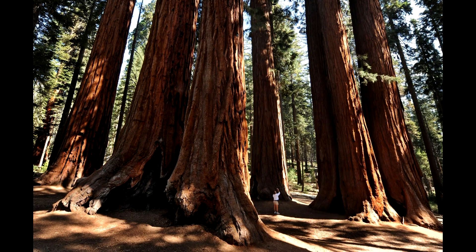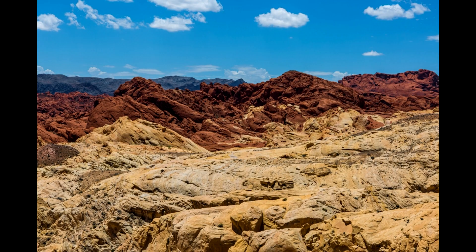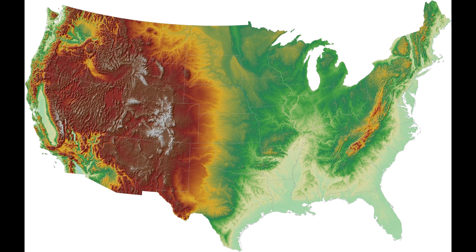Once you get to the eastern side of the Sierra Nevada or the Cascades, things change a lot. The atmosphere dumped all its moisture on the west side, leaving none for the east side. East of the Cascades and Sierra Nevada is where deserts begin — very little vegetation, mostly xerophytic plants like cacti with deep roots needing very little water. You also get very extreme temperature ranges; without coastal air masses, you have very hot summers and very cold winters.